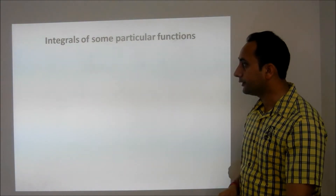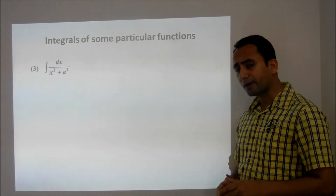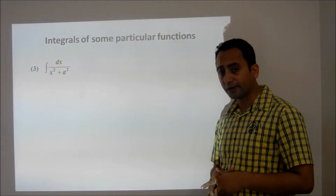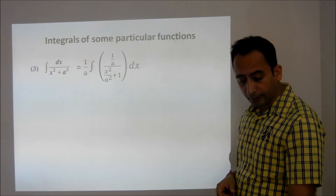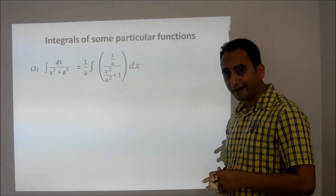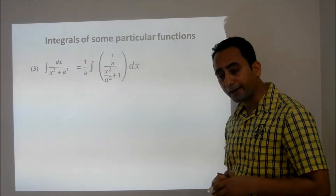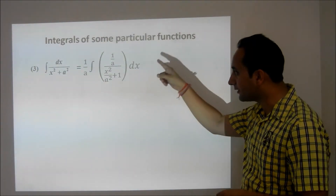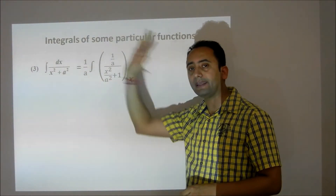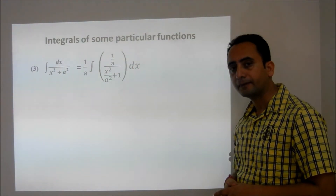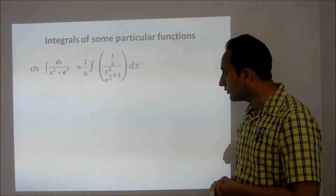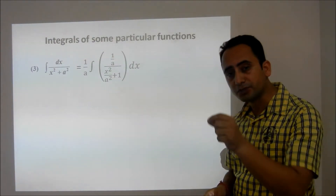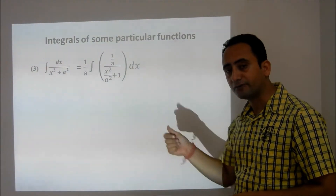The third particular integral is 1 upon x squared plus a squared. In this case, what I will do is divide the numerator and denominator by a squared. After dividing by a squared, I take 1 upon a outside the integral sign. The benefit of this step is that I can use the method of substitution to find the result.